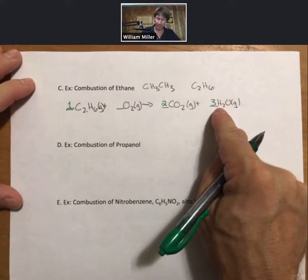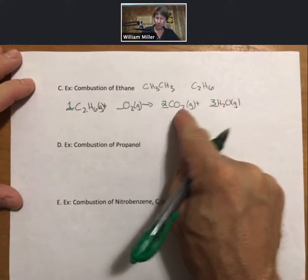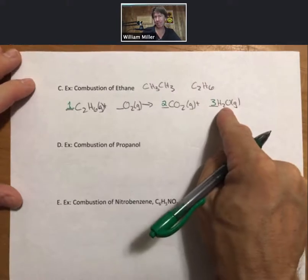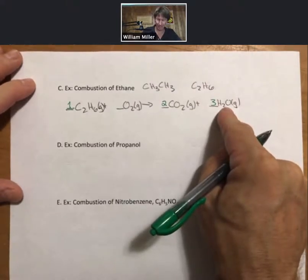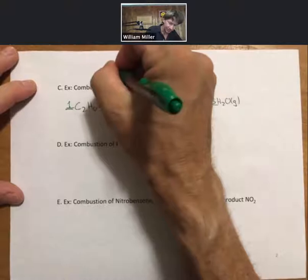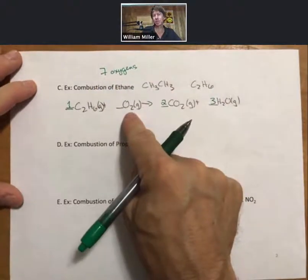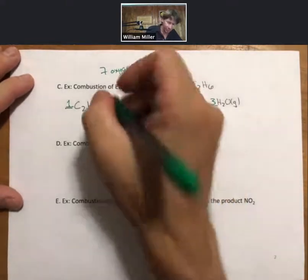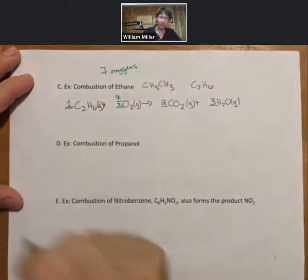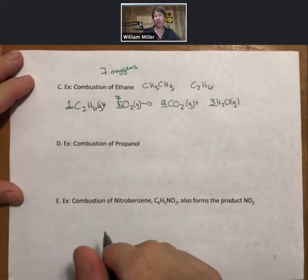Gathering up my oxygens, I have four plus three is seven. That means I need seven oxygens on the reactant side. However, oxygens come two at a time. Therefore, my coefficient for oxygen is seven halves.